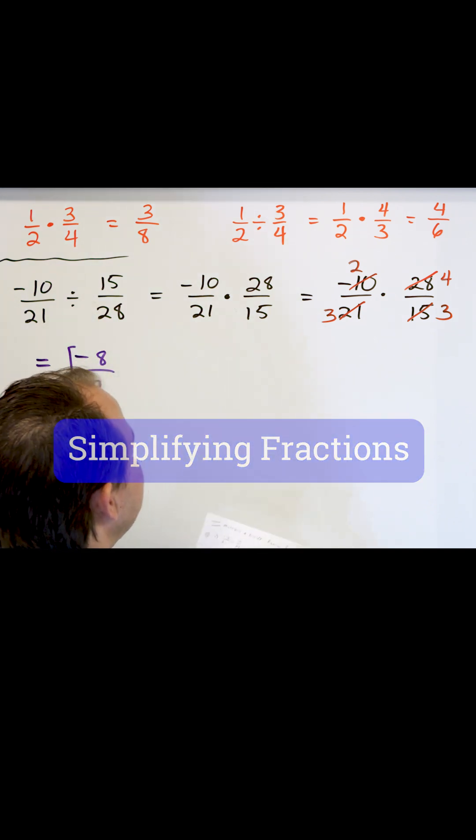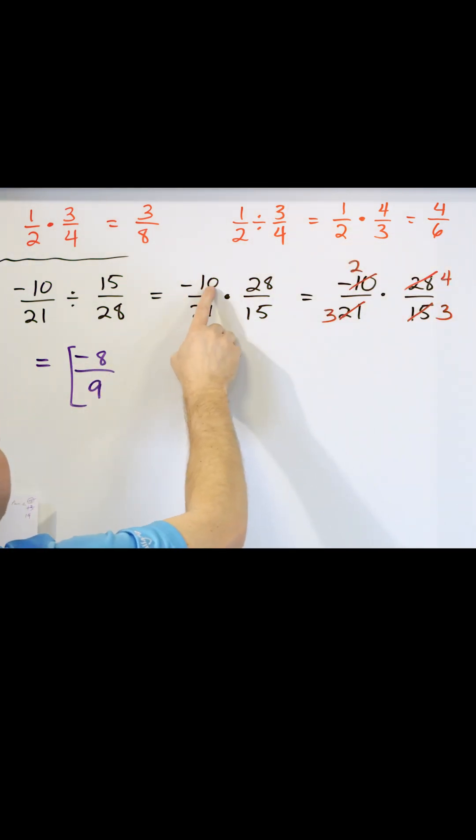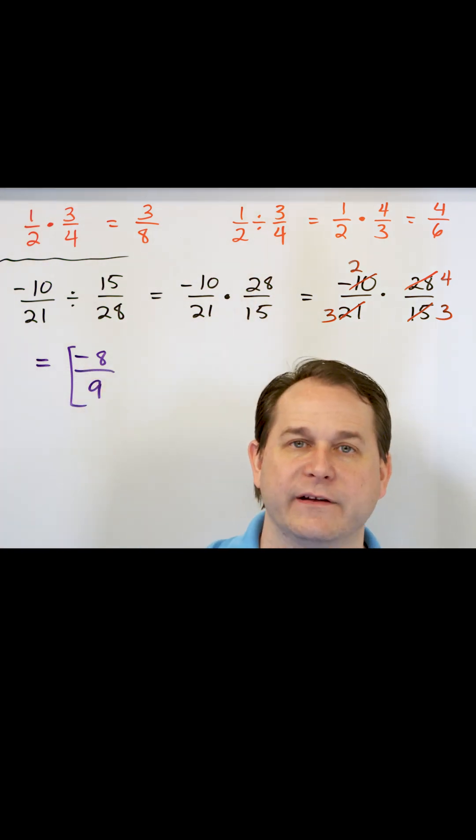Now I want to stress to you that you don't have to do this step, of course. You could take this, negative 10 multiplied by the 28 will give you negative 280 on the top, right?